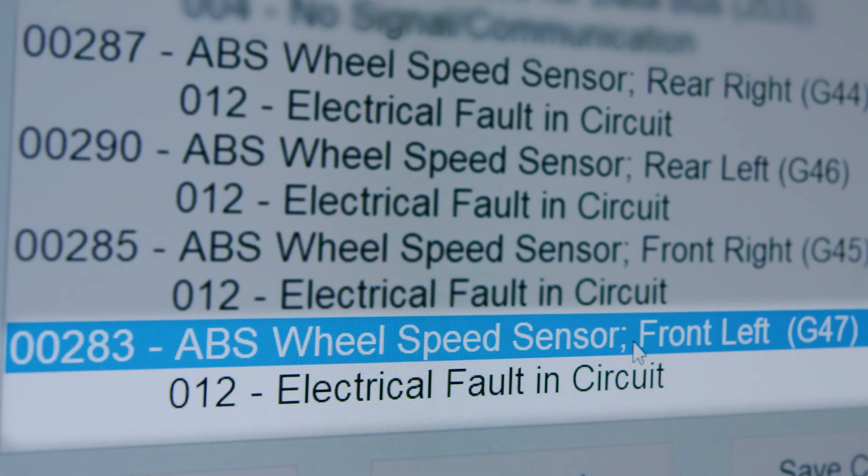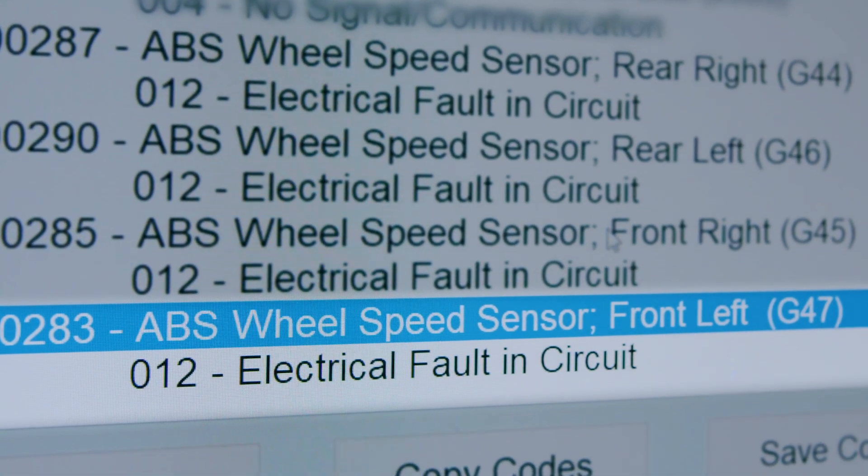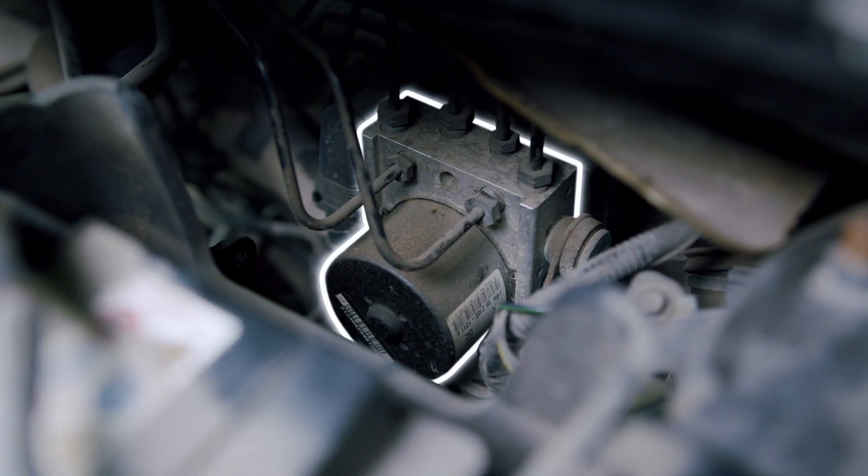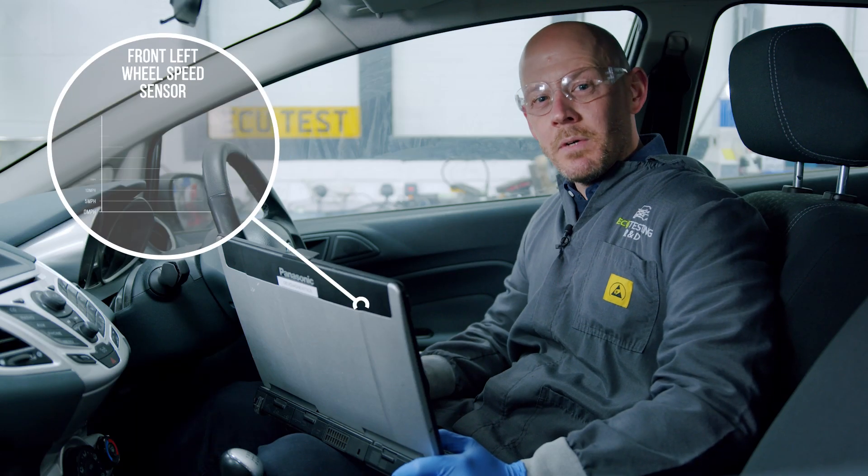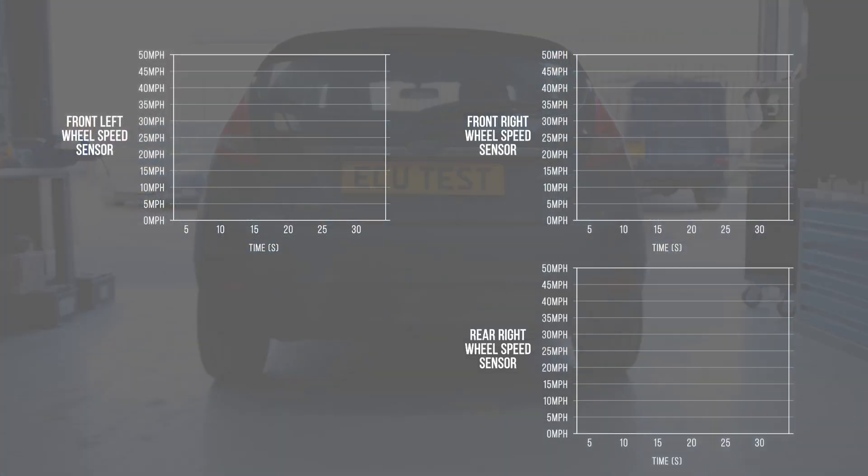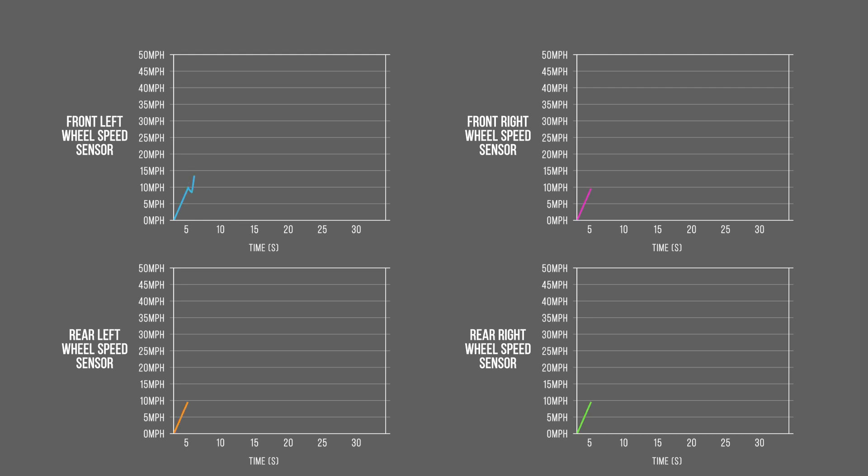Ah, here we are. Front left wheel speed sensor. Whilst we are hooked up with diagnostics, we should check out what the ABS module is seeing. To do this, we will load up live data in a graph format for all four wheels and have a little drive. It only takes a short drive, and already we can see that the front left sensor is giving us an incorrect reading. Let's get back into the garage.